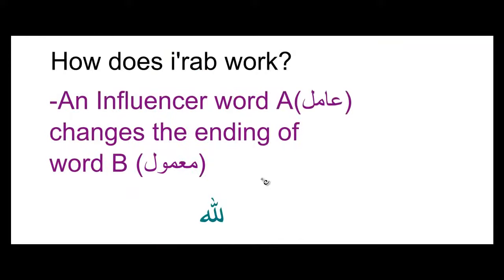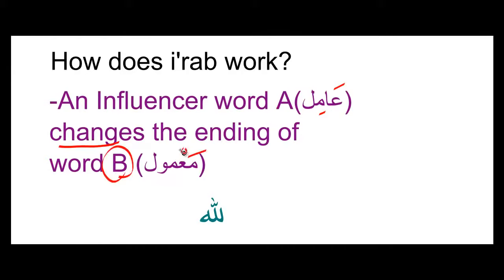So how does i'raab work? An influencer word — let's call it A — also known as amil, the influencer is known as amil, changes the ending of word B, what is known as ma'amool. Let's look at an example to see how this is applied.